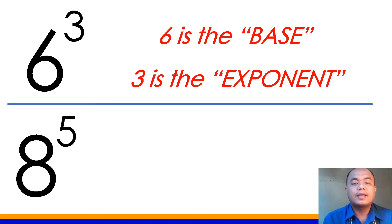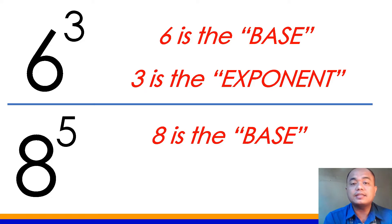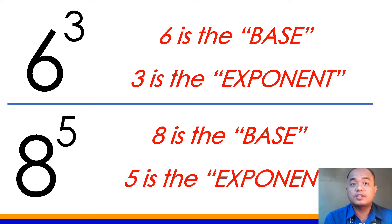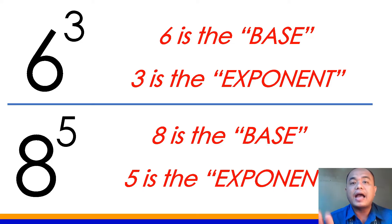And this one — how do you read that? We read that as 8 raised to 5, or 8 to the 5th power. Pwede rin natin basahin na 8 to the exponent 5. And what is our base here? 8 is our base and 5 is our exponent. Our 8 here is used as factor 5 times, or our 8 here as our base is being multiplied 5 times.